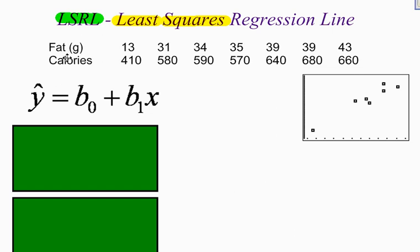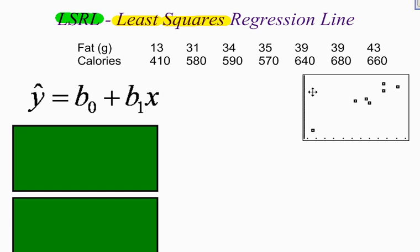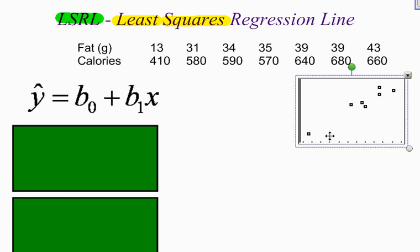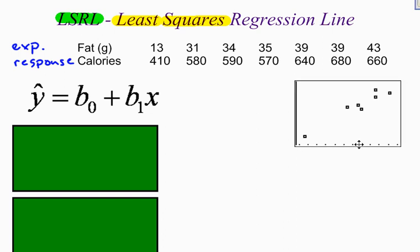I've got some data here — fat grams and calories for some different foods you can find at the grocery store. For example, one product had 13 grams of fat and 410 calories; another had 31 grams of fat and 580 calories. I went ahead and created a scatter plot for this data set. We're going to use fat as our explanatory variable and calories as our response variable.